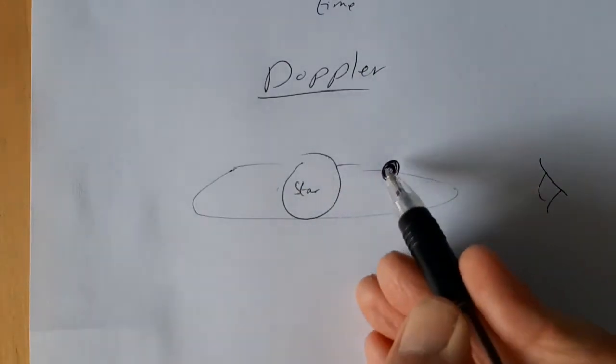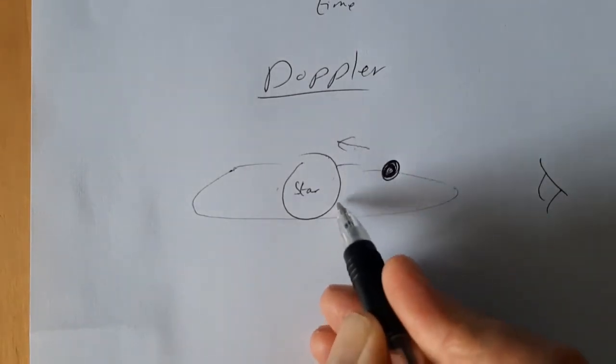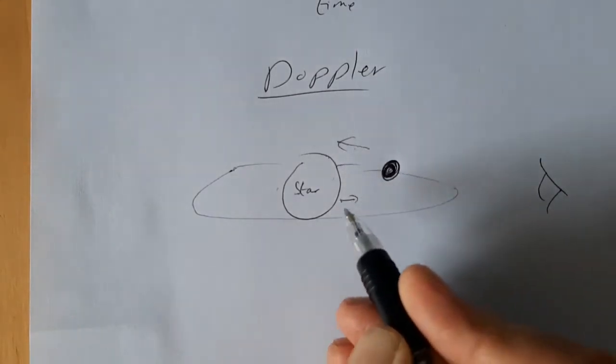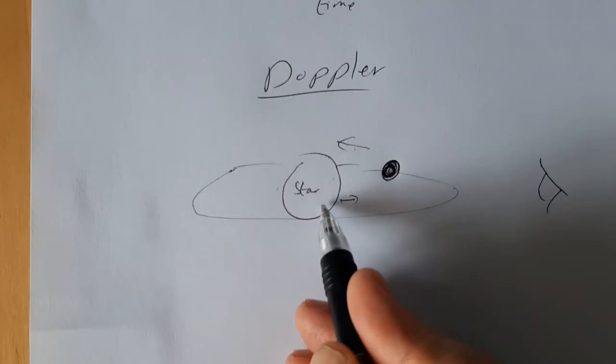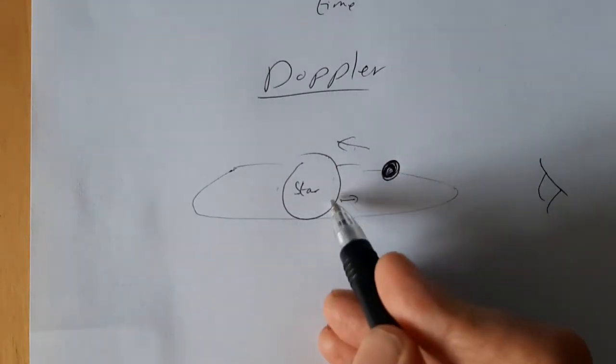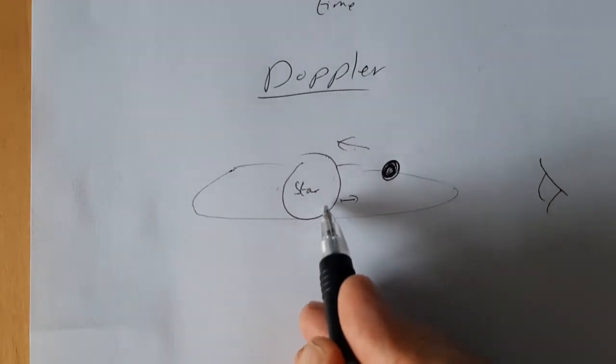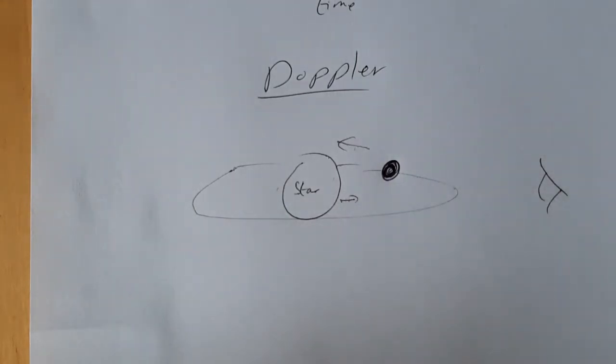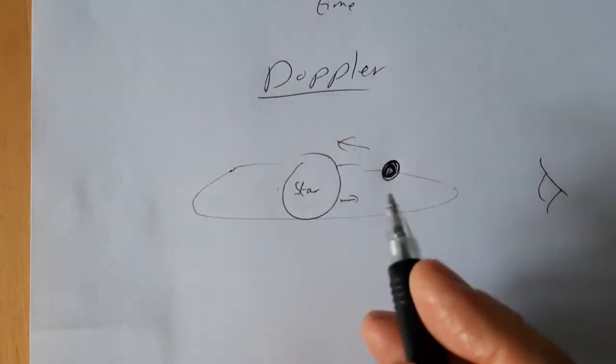When the planet is receding, moving away from us, just momentarily at that moment, the star is moving slowly towards us. So if this has got 10 times more mass and it's moving towards us just a tenth of the velocity, however, that's just enough because we're very sensitive to these Doppler measurements, just enough to shift the spectra of the star.